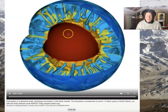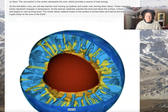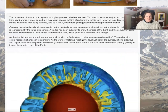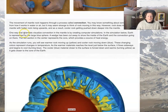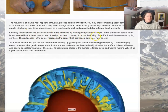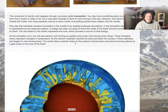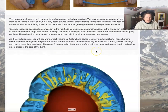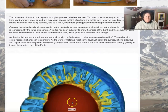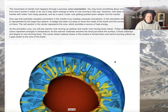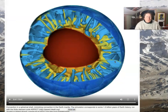It's going to be millions of years before the planet cools down — it started out very hot when it formed and it's still cooling. One way that scientists visualize convection in the mantle is by creating computer simulations. Earth is represented by a large blue sphere with a wedge cut away to show the inside — the mantle and the convection going on there. The red center represents the core, which is the source of heat energy.